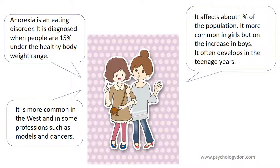Anorexia is an eating disorder. It's diagnosed when people are 15% under the healthy body weight range. It affects about 1% of the population and it's more common in girls. However, it is on the increase in boys. It often develops in the teenage years and it's more common in the West and in some professions such as models and dancers where being thin is considered important.